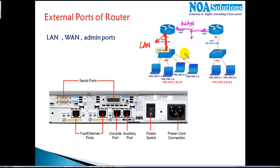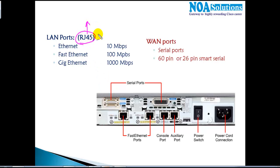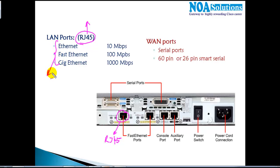We'll get into WAN connectivity in more detail in later sections. For now, let's understand the different kinds of ports generally found on a router: LAN ports, WAN ports, and administrative ports. Starting with LAN ports — these typically look similar to the normal RJ45 port you find on the back of your computer.